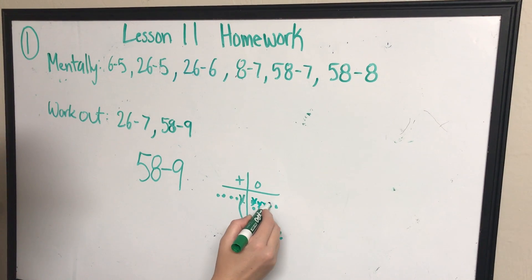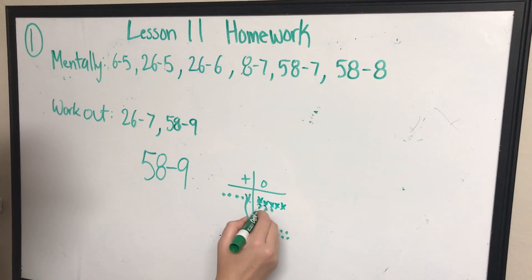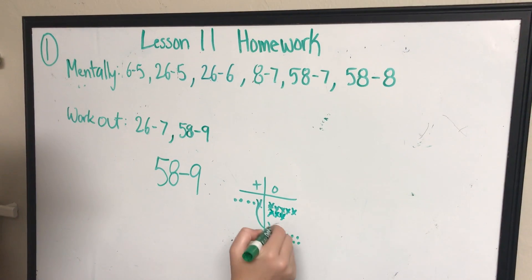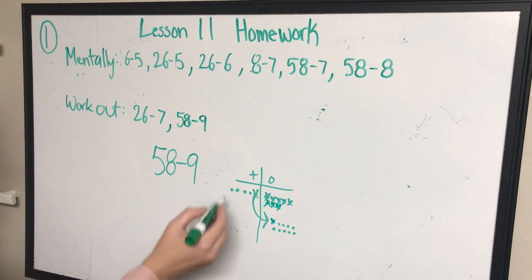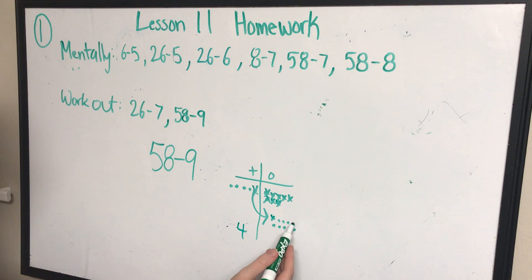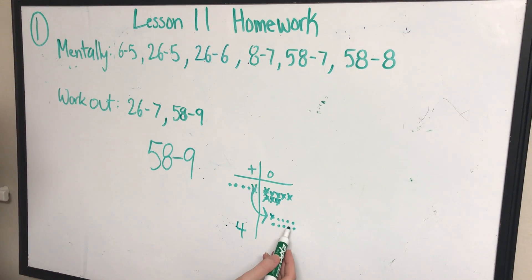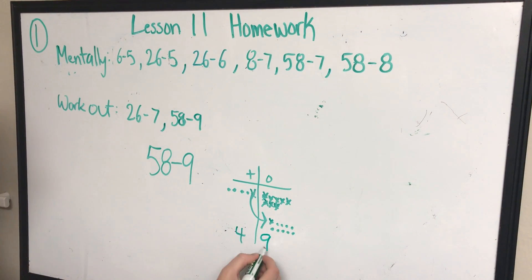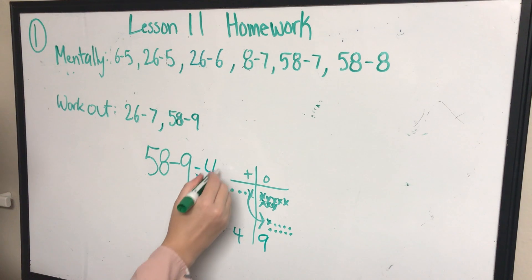One, two, three, four, five, six, seven, eight, nine. My answer, how many tens do I have? Four. How many ones do I have? One, two, three, four, five, six, seven, eight, nine. So what's my answer? 49.